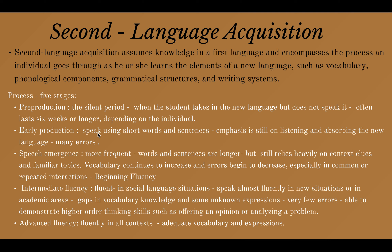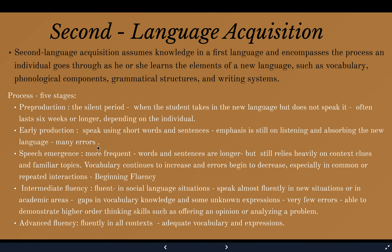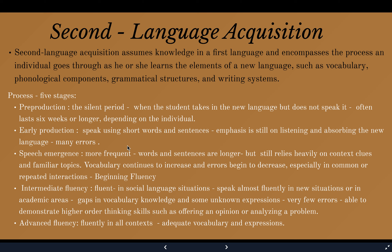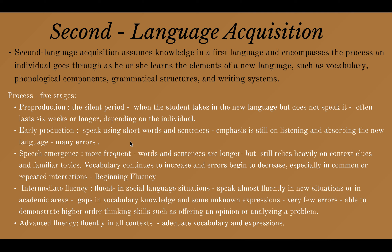There are 5 stages in second language acquisition: Pre-Production, Early Production, Speech Emergence, Intermediate Fluency, and Advanced Fluency. In Pre-Production, the silent period, the student is not speaking — they are listening. They are surrounded by the foreign language. Early Production is the second stage in which learners use short words and sentences, still depending on listening, and absorbing the new language. There are many errors at this stage.